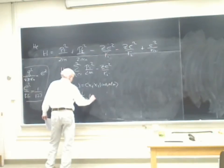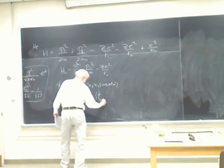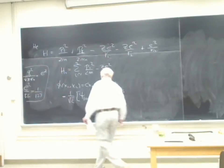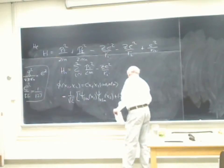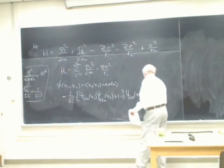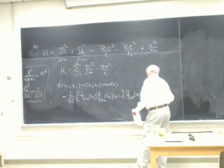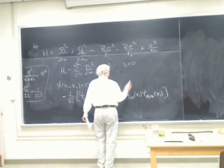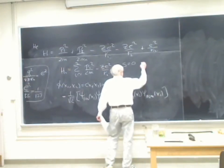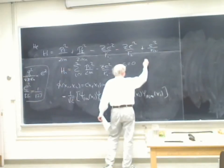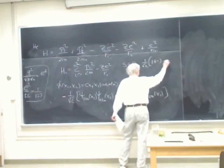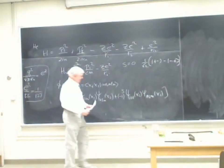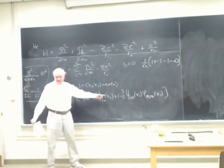The antisymmetrized state is ψ₁₀₀(x₁) ψ_NLM(x₂) plus minus (-1)^S ψ₁₀₀(x₂) ψ_NLM(x₁). S here is the spin. S equals zero means the spin state is (1/√2)(|+−⟩ − |−+⟩), so the spin is antisymmetric and the space wave function is symmetric.